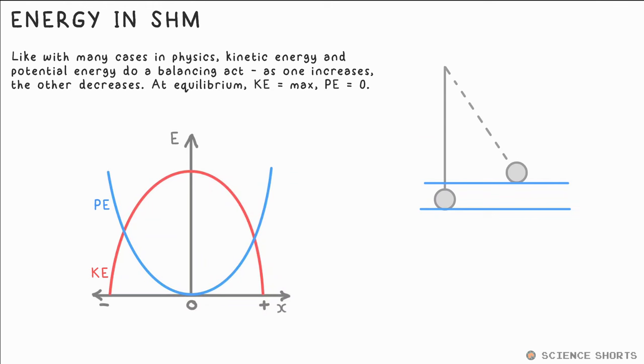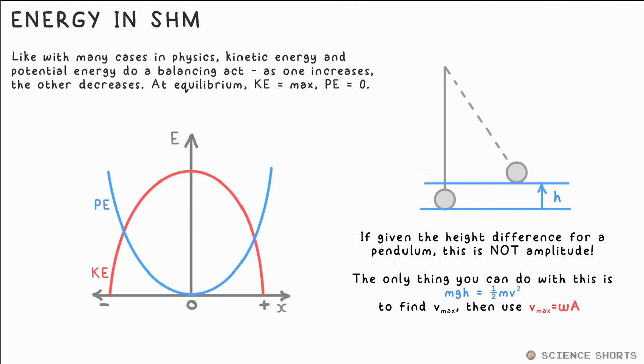Be careful with displacement for a pendulum, though. The displacement is roughly a straight line from equilibrium to where it is. It's not the vertical height it's moved. That means if you're given the maximum height of a pendulum, the only thing you can do with that is find the GPE and equate that to kinetic energy in order to find V_max. Height is not amplitude for a pendulum. You can then find out more about the oscillations using V_max equals 2πFA.